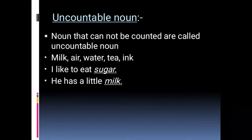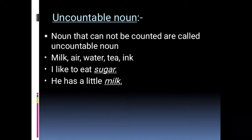What do you mean by uncountable noun? Nouns that cannot be counted are called uncountable nouns. Examples: milk, air, water, tea, ink — these are all considered uncountable nouns as we cannot count them. 'I like to eat sugar' — sugar is an uncountable noun. 'He has a little milk' — milk is an uncountable noun as we cannot count milk.